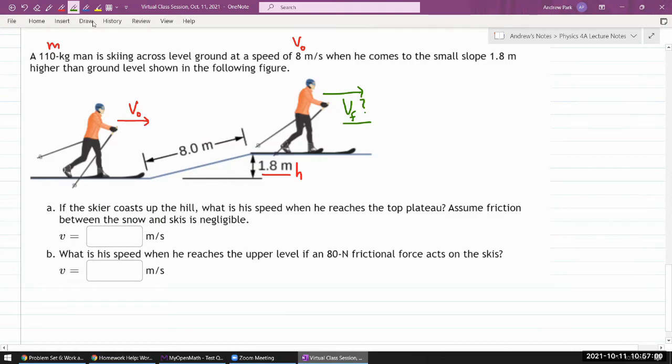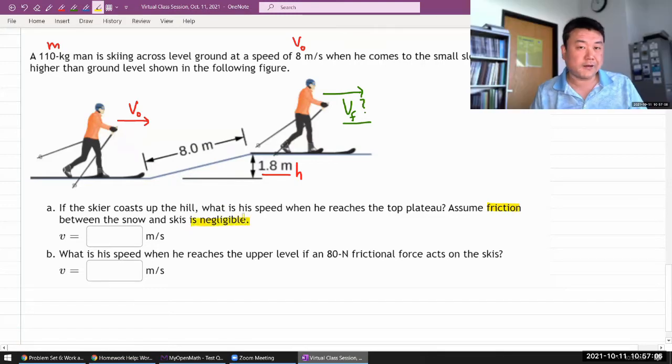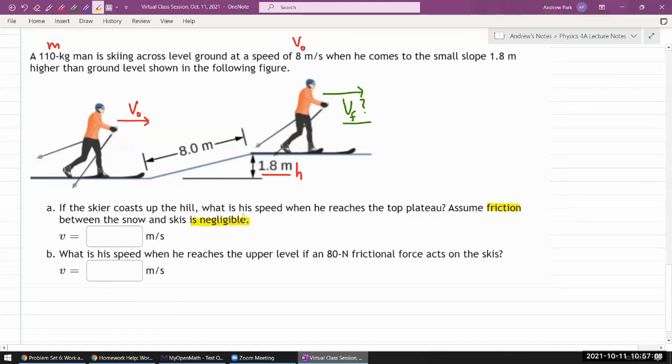That's whenever a question says friction is negligible. It's a keyword or sometimes I call it code word, saying that energy is conserved. So, you can use conservation of energy. It's good to have the statement explicitly that justifies our use of conservation of energy.